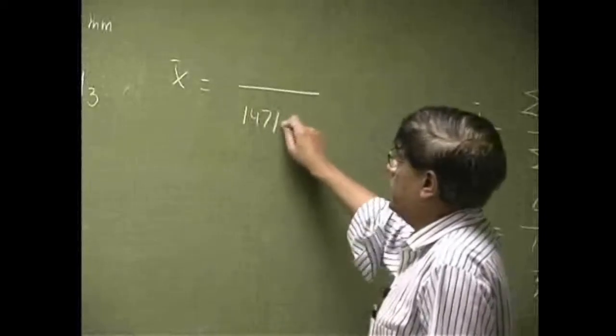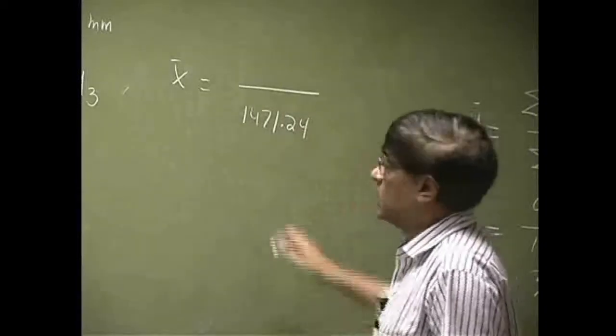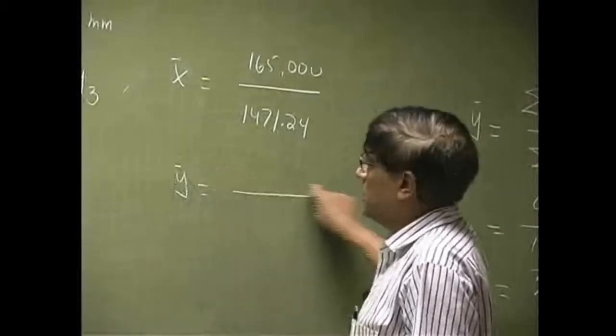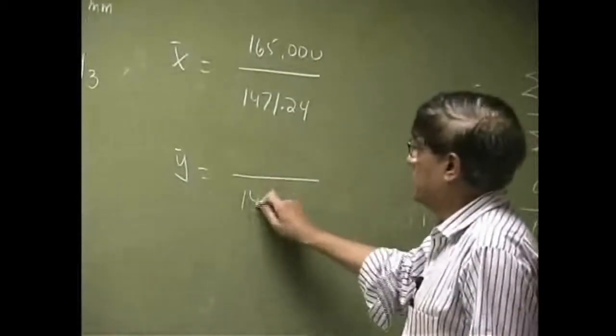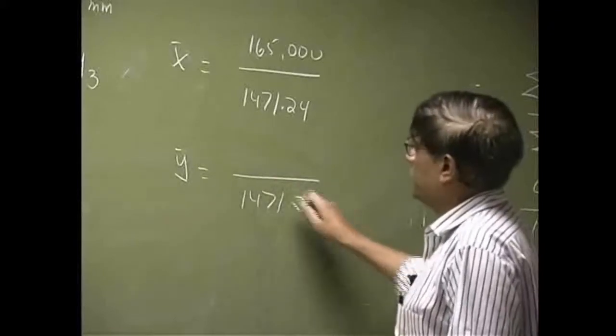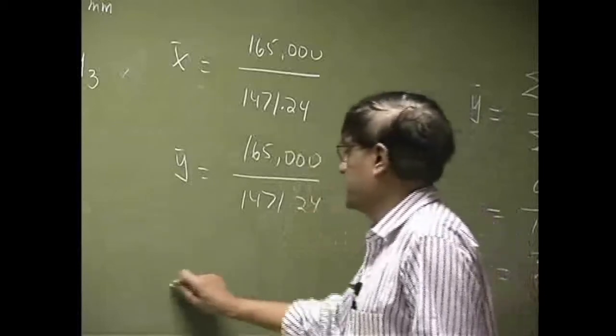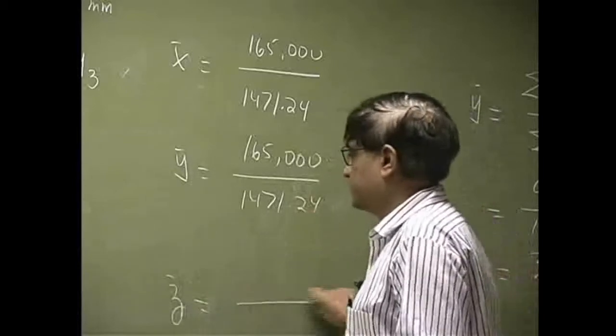So the coordinate x bar is going to be 165,000 over 471.24. The coordinate y bar will be 165,000 over 471.24.